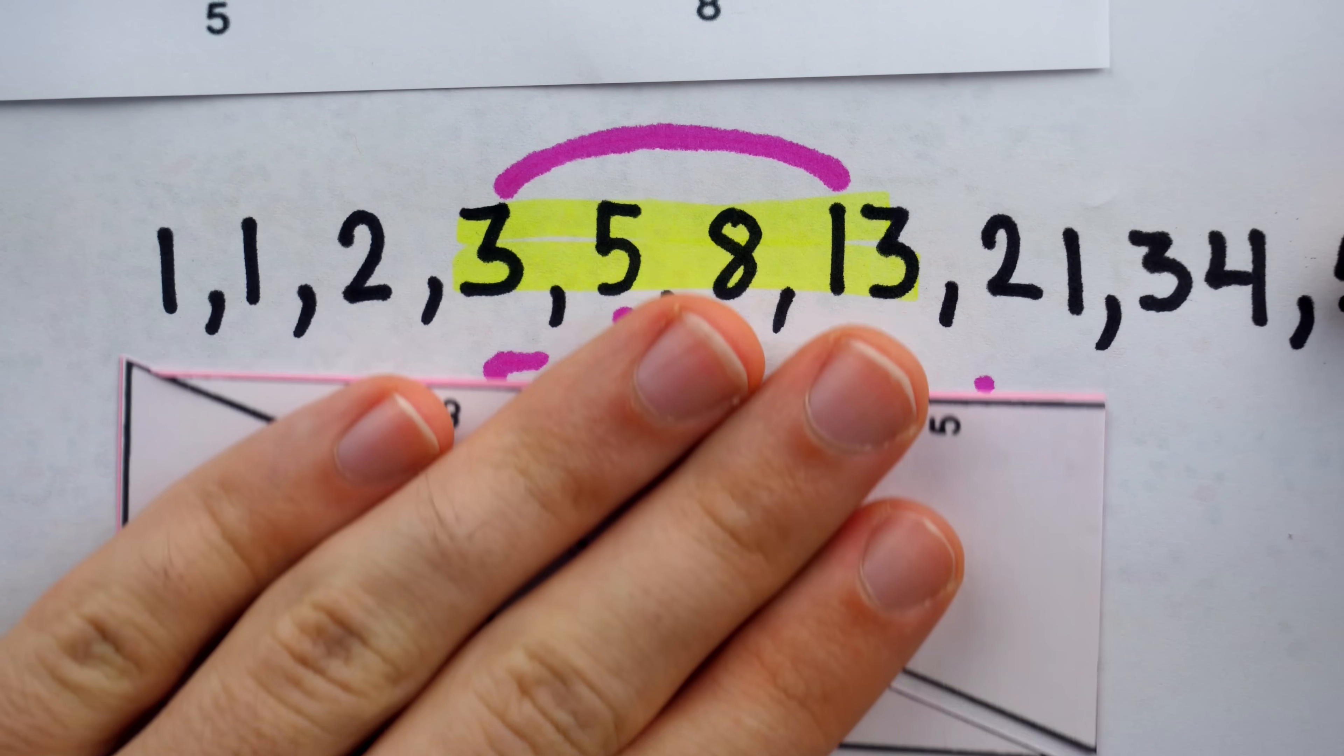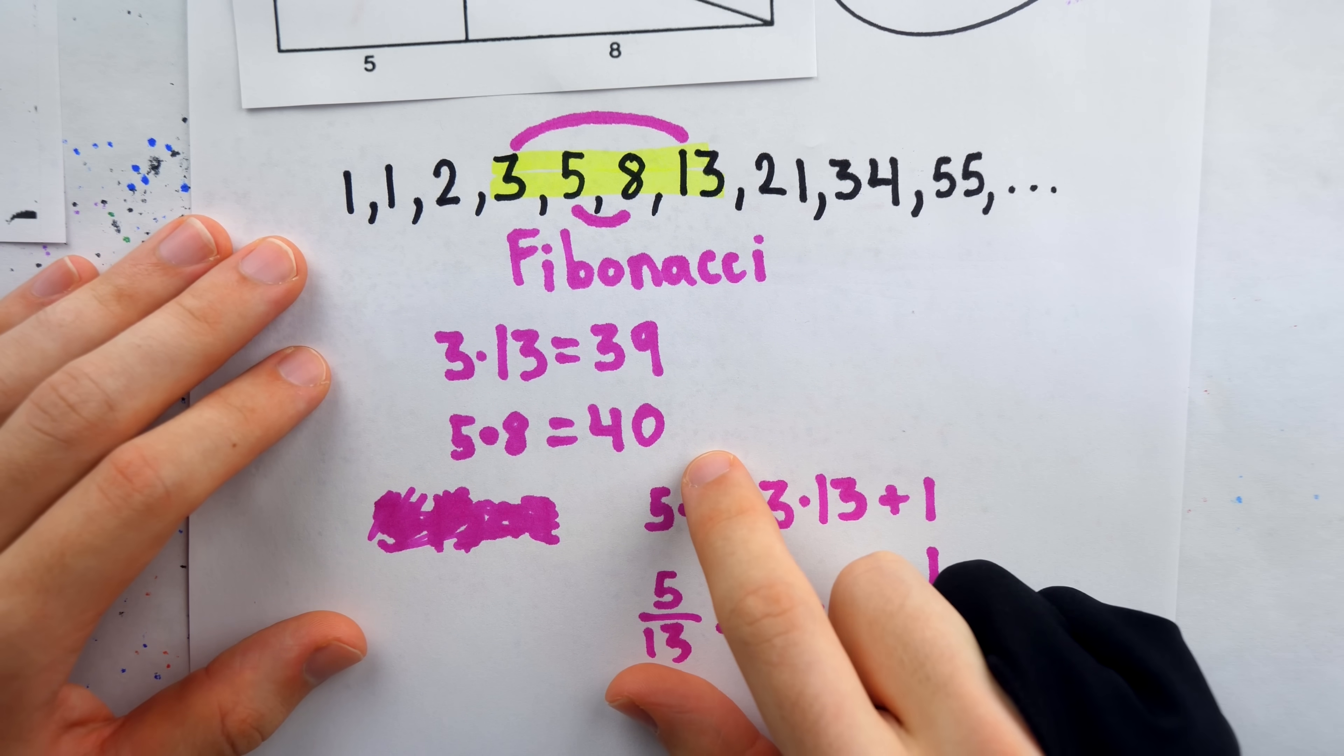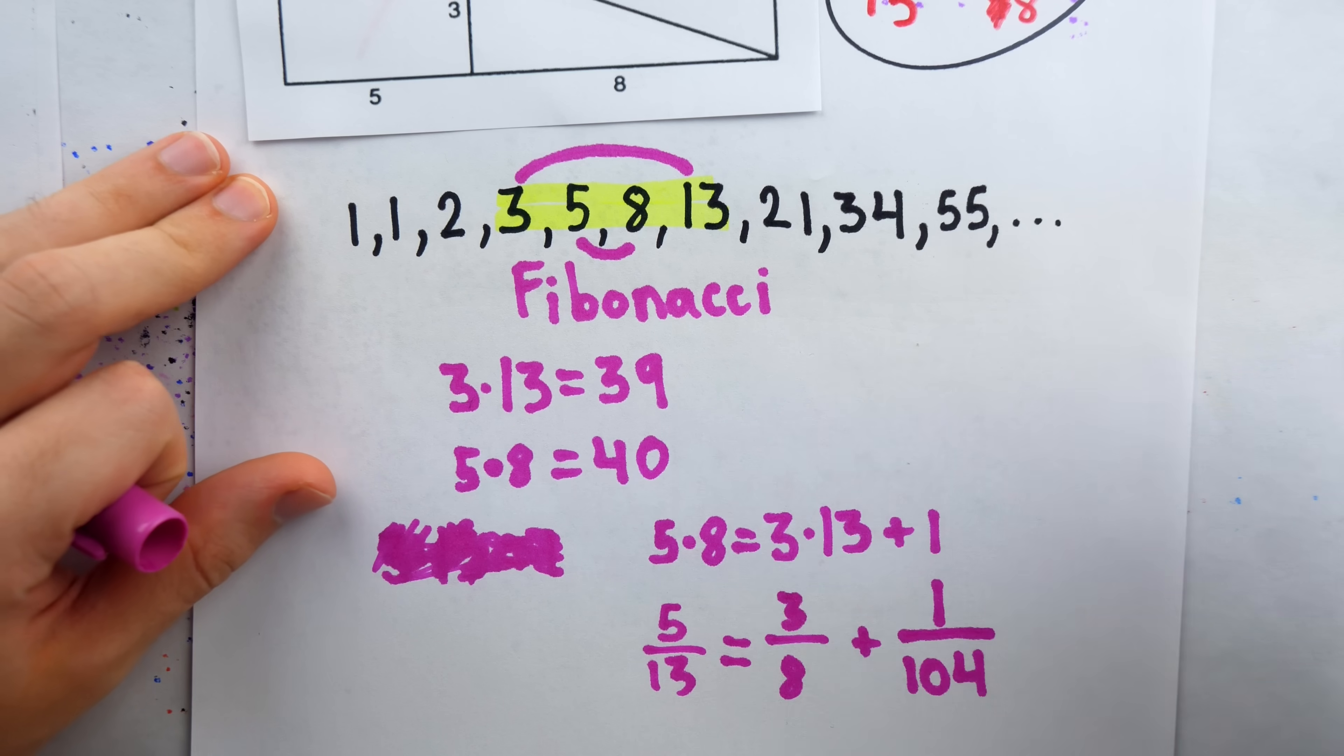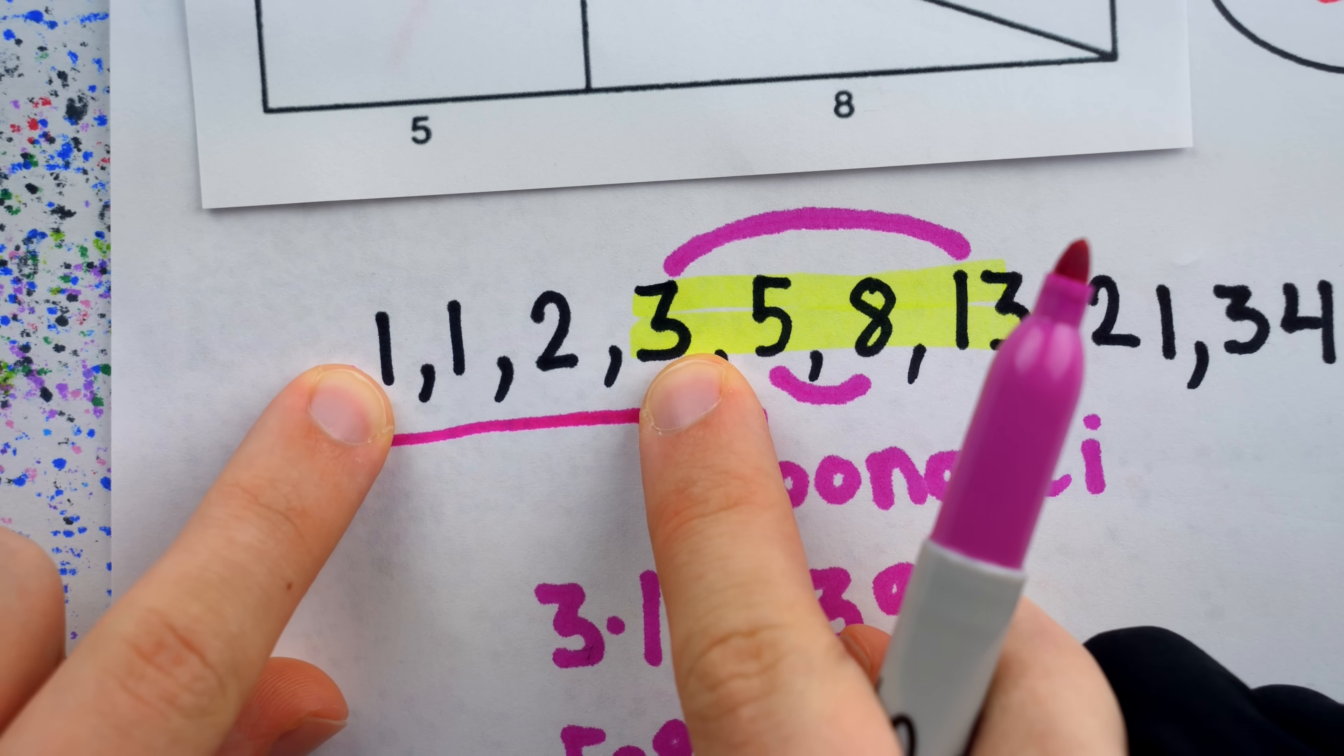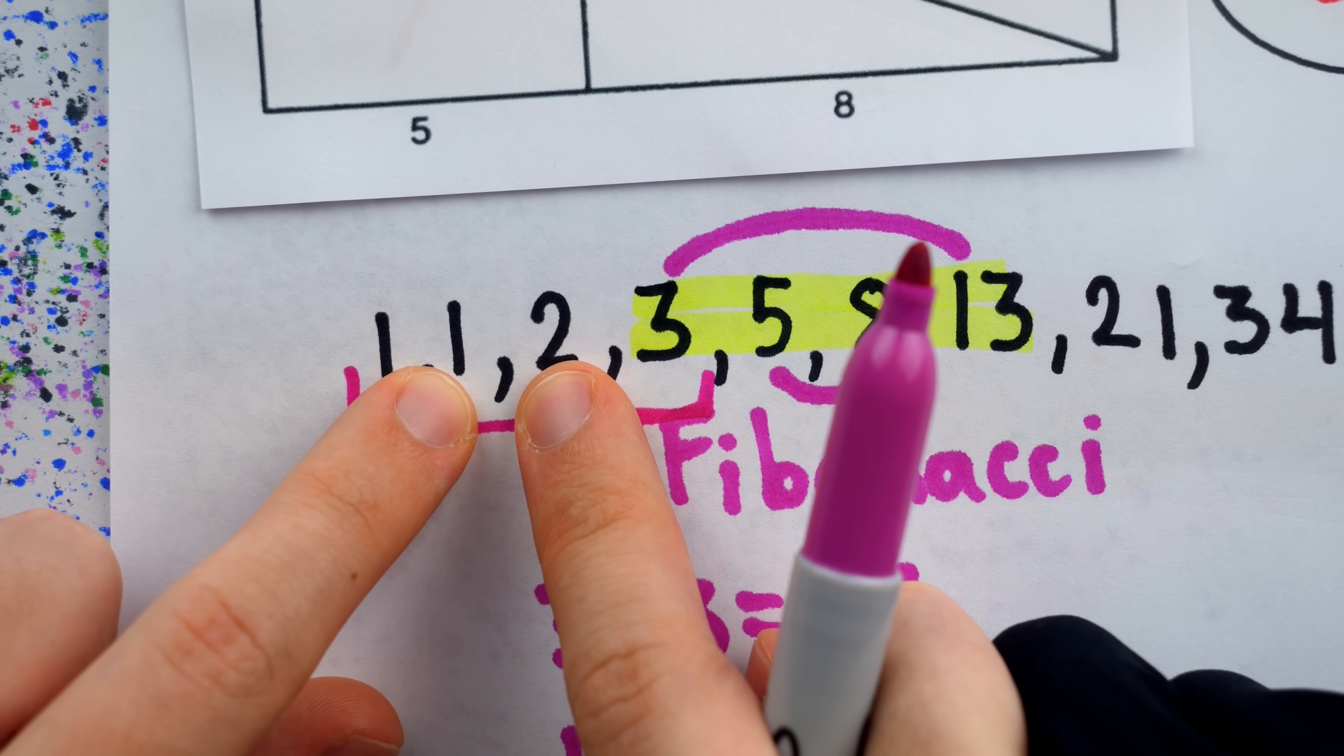Then, of course, the cool thing with the Fibonacci sequence is this property holds for any 4 consecutive numbers from the sequence. We could look at a smaller example, like these first 4 numbers over here. The outer pair multiplies to 3, the inner pair multiplies to 2, a difference of 1.